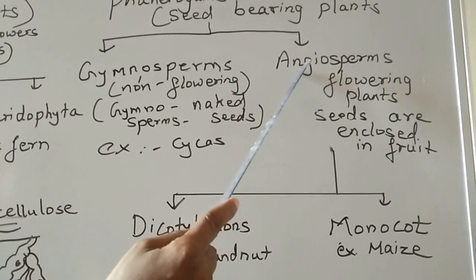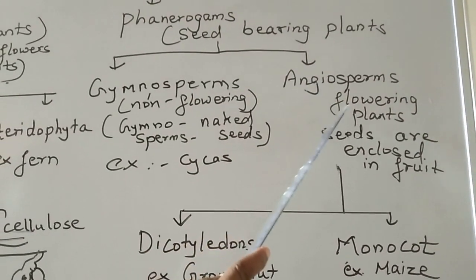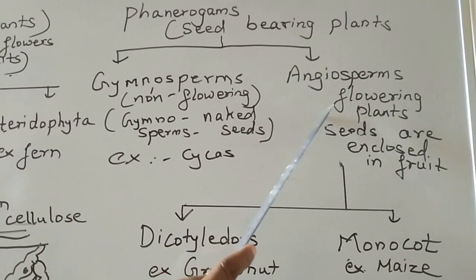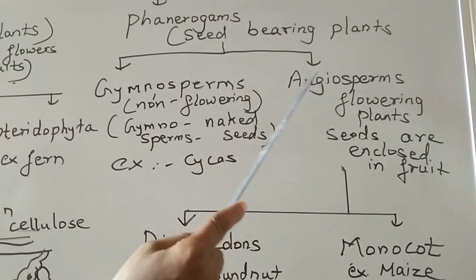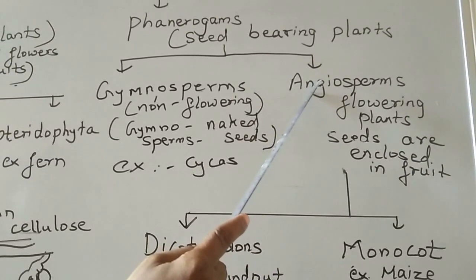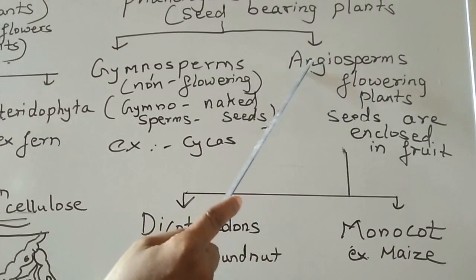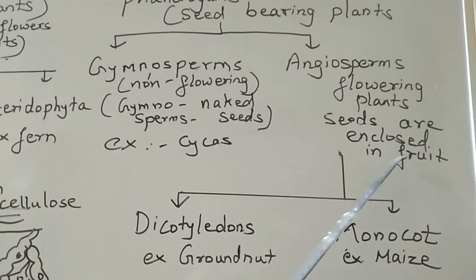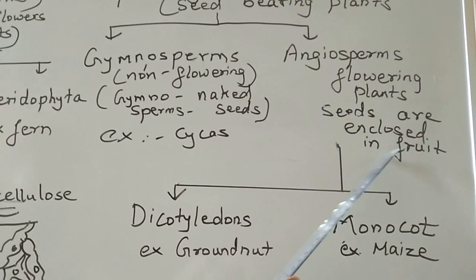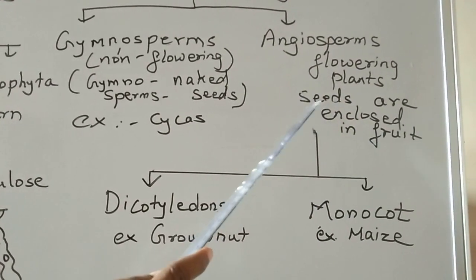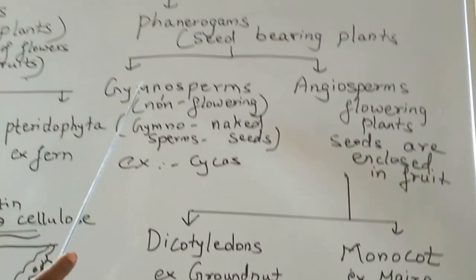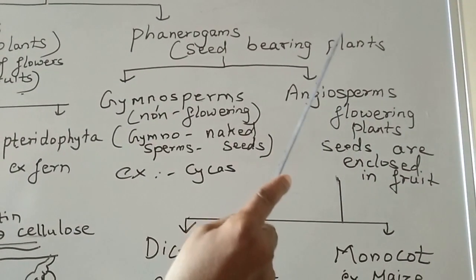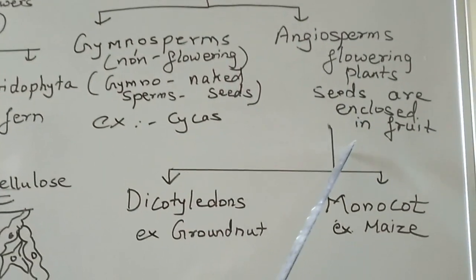What are angiosperms? Angiosperms are those plants which are having flowers. Flowering plants are included under angiosperms. Another characteristic of angiosperms is that the seeds are enclosed in a fruit. Seeds will be present in the fruit itself. In this way we have classified phanerogams into two types, gymnosperms and angiosperms.